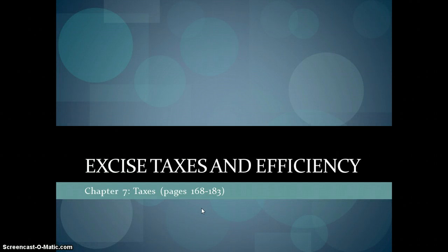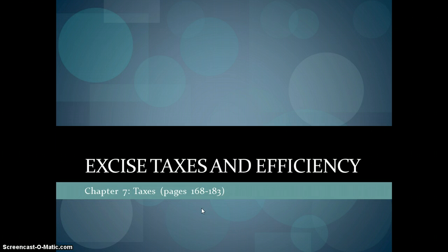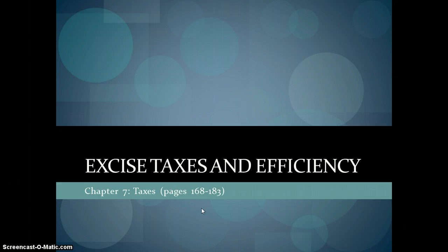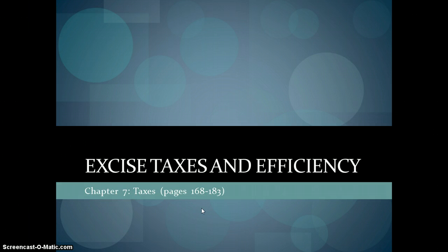Welcome back. Today we're going to look at excise taxes and their impact on the efficiency of the market. It's all in Chapter 7 of your textbook, pages 168 to 183. We're going to look at how excise taxes impact equilibrium, output, and price, how you can measure the total amount of money collected as a result of the tax, and how excise taxes impact the total surplus of the market and the relative impact on producers versus consumers depending on the elasticity of demand and supply.